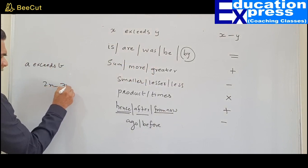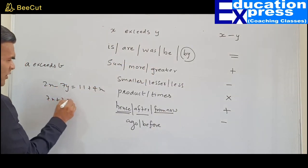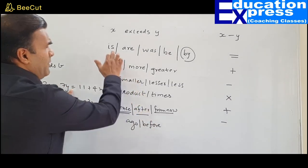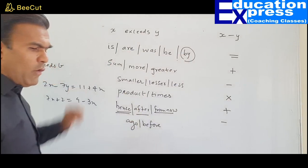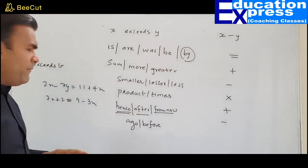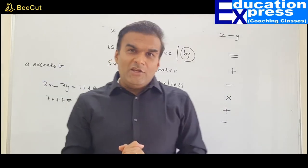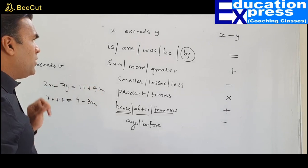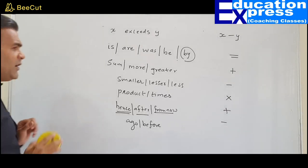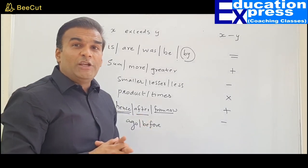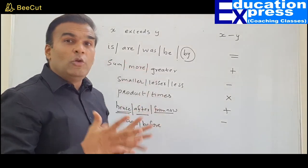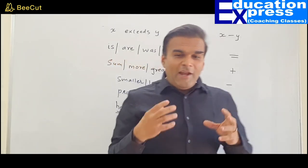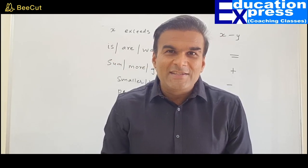Remember: once you encounter the equal-to sign — whether it comes from the words 'is,' 'are,' 'was,' or 'be' — all operations and conditions given in the question must be applied on the other side of that equal sign, not the same side. I am sure you will understand this more clearly when I actually do the sums. As far as the rules are concerned, you are familiar with them — now let's see if these rules, when applied correctly, give us the expected results.